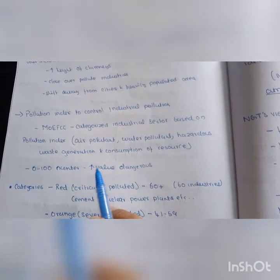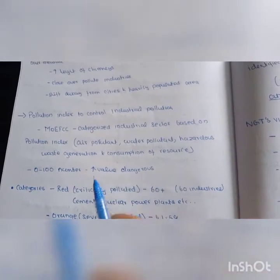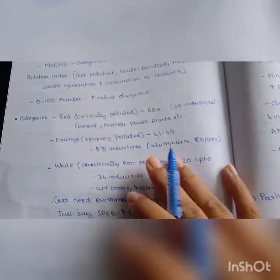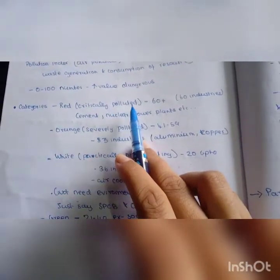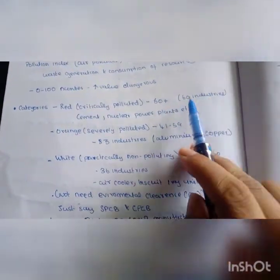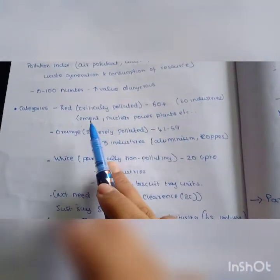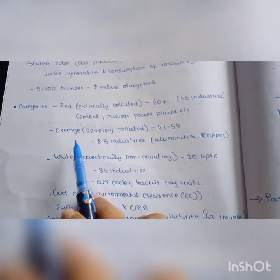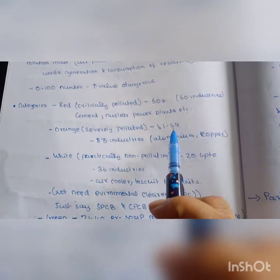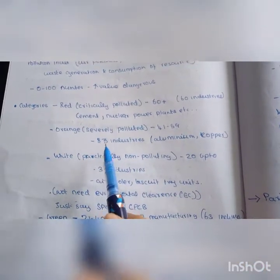Zero to 100 numbers. As value increases, dangerous level increases. There are four categories: Red, Orange, White and Green. Red is critically polluted with 60 industries, for example cement and nuclear power. Orange is severely polluted, 41 to 59, with 83 industries, for example aluminum and copper extraction industries.